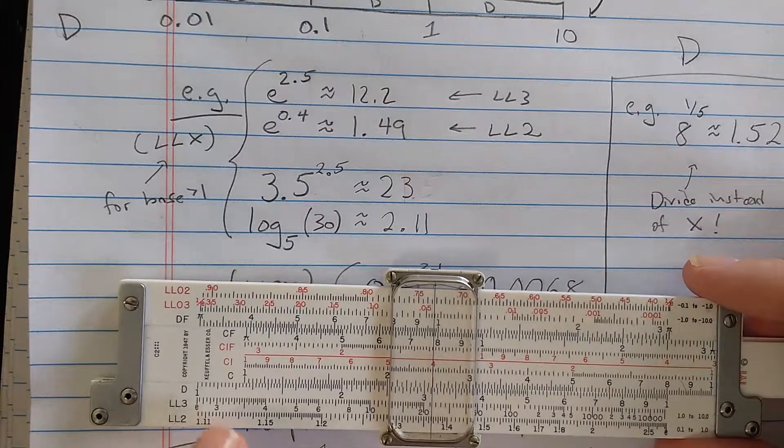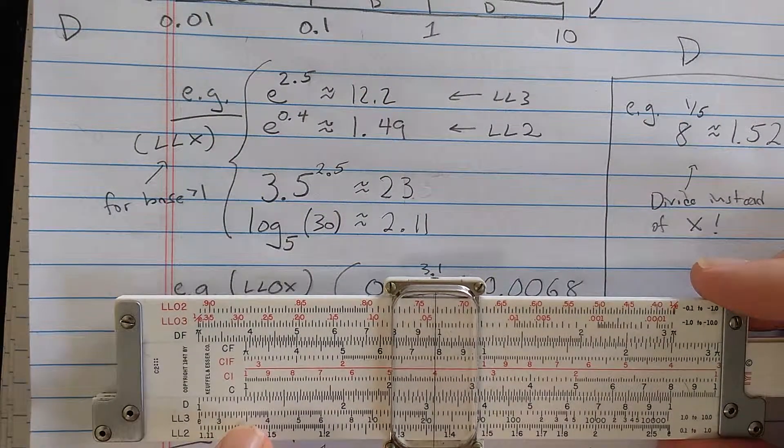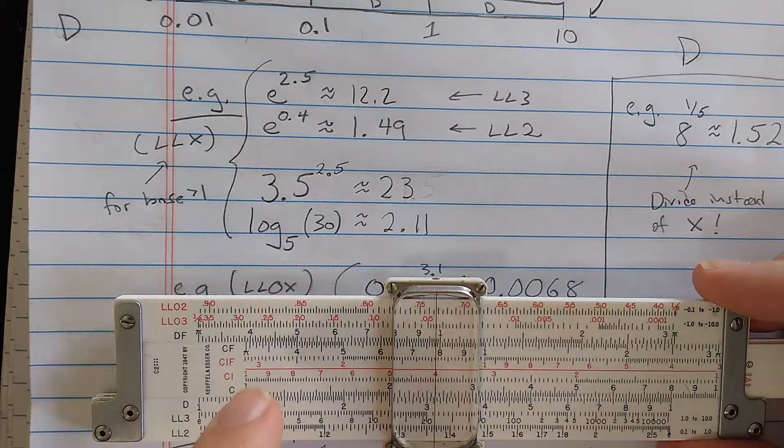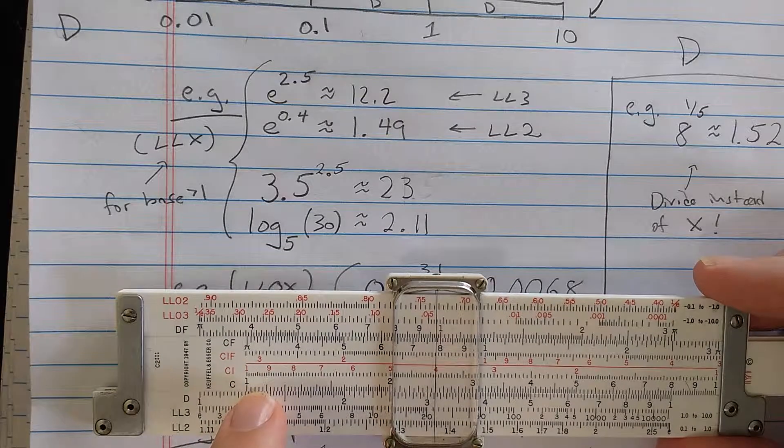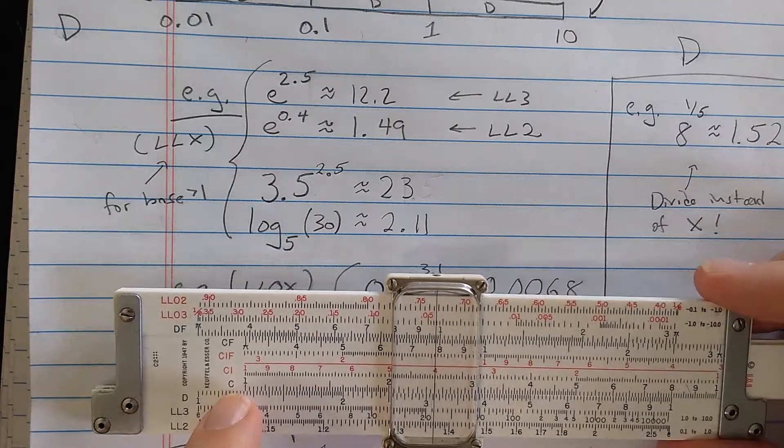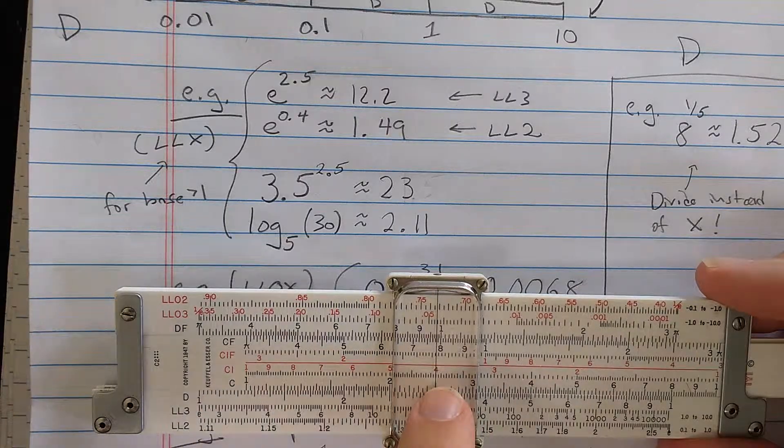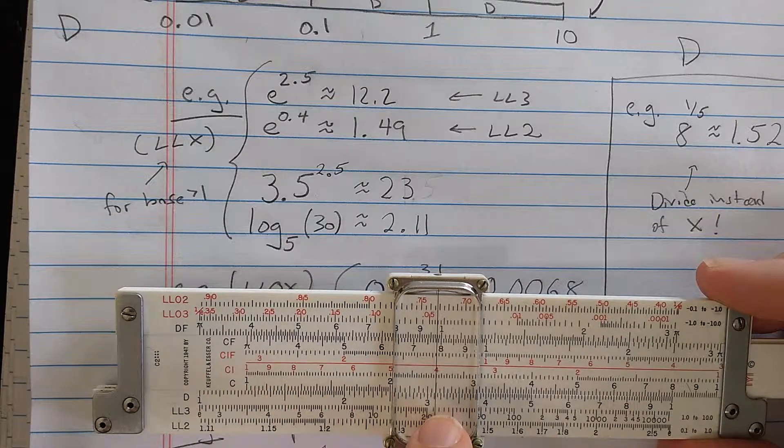Now how does this work? Well, essentially, when you go from log-log 3 to the D scale, you've computed a natural log. So you're reading the log on the D scale. You multiply the log by 2.5 by going out to 2.5 from the index.